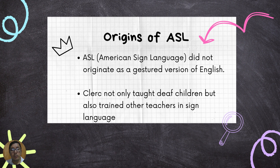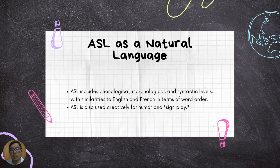Clerc not only taught deaf children but also trained other teachers in sign language. Over time, this imported French Sign Language evolved, incorporating elements from indigenous natural sign languages used by American deaf individuals, eventually becoming what we know as American Sign Language today. This unique history also explains why American Sign Language and British Sign Language users do not share a common sign language, as they are totally different.